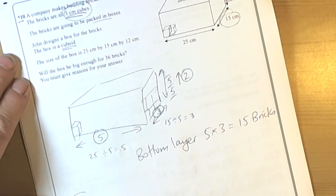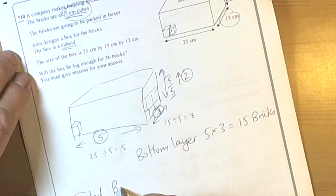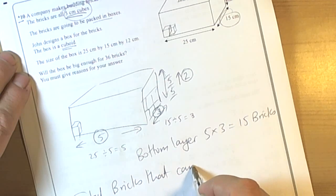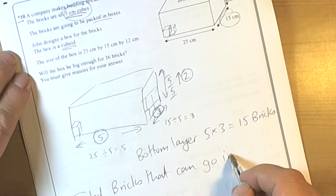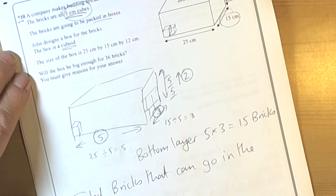So total number of bricks that can go in the box is 5 along the bottom length, times 3 along the side length, times 2 layers. When we do that calculation, we get 30 bricks.